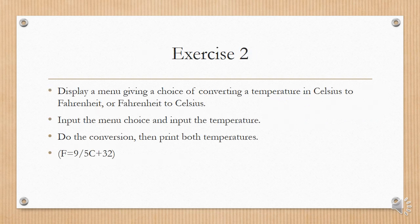Exercise 2. Display a menu giving a choice of converting a temperature in Celsius to Fahrenheit or Fahrenheit to Celsius. Input the menu choice, and input the temperature. Do the conversion, then print both temperatures. And then they've given you the formula F equals 9 divided by 5 times C plus 32.